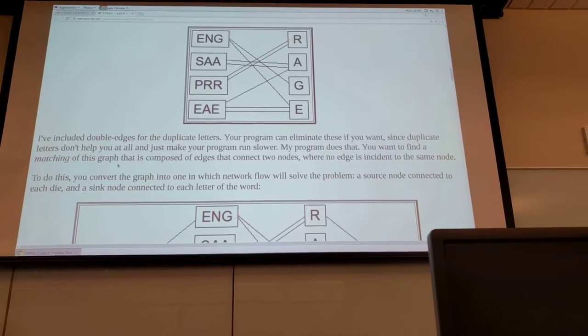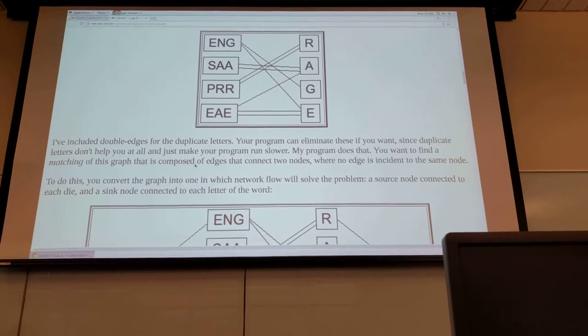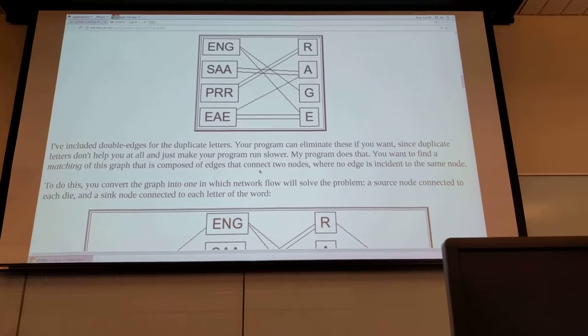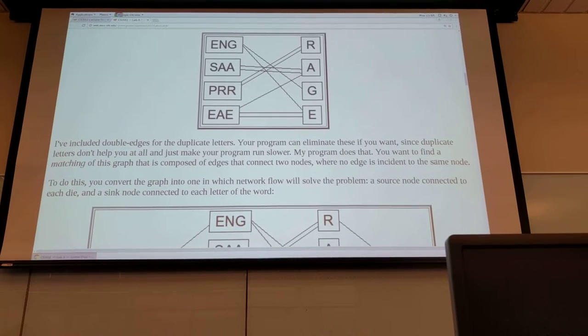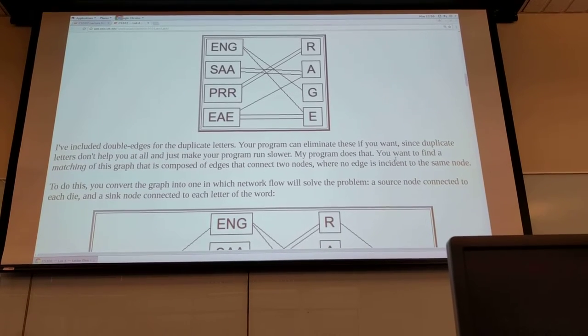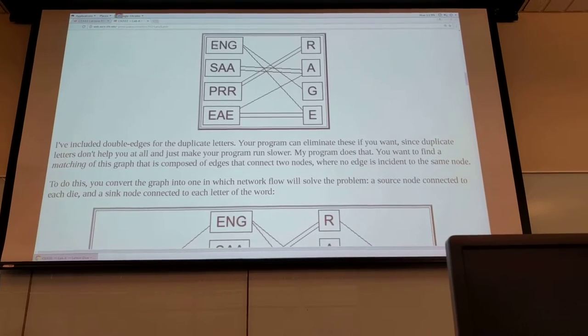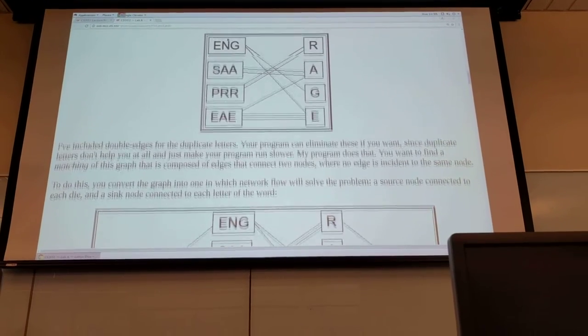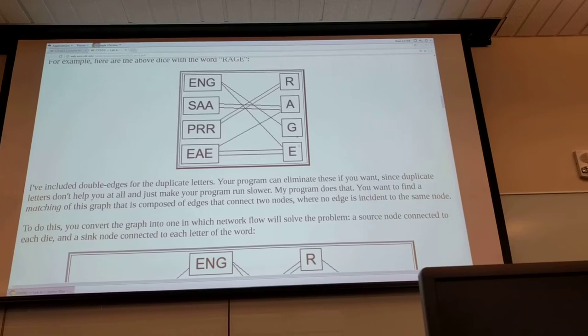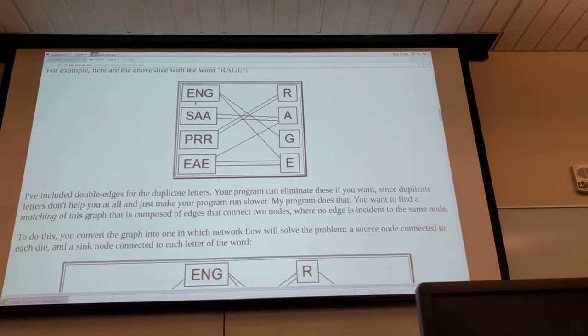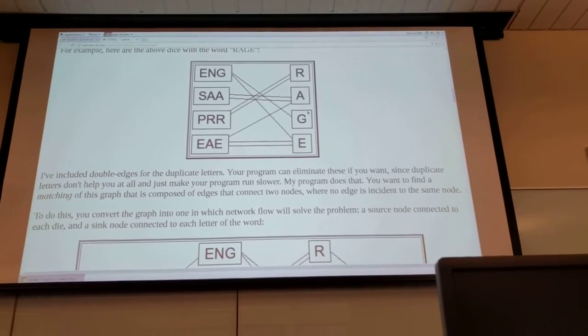You will find that a matching of this graph is composed of edges that connect two nodes when no edge is incident to the same node. Which means that basically you can create a connection so that each of the letters that you're trying to spell goes back to one of the die and none of the letters have to go back to the same die.